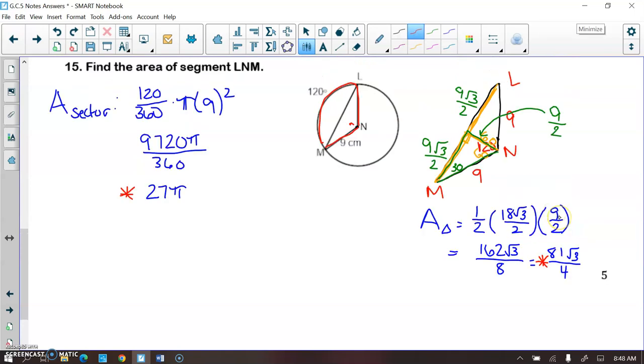So now if I wanted to write or find the area of the segment in exact format, I would take the area of my sector minus the area of my triangle. So it would just need to stay like this. My units are centimeters squared. The reason why it stays like this is because my 27 pi does not have a root 3 attached to it, and my 81 root 3 over 4 does not have a pi attached to it. So these are not like terms.